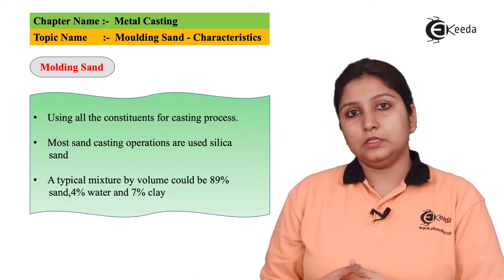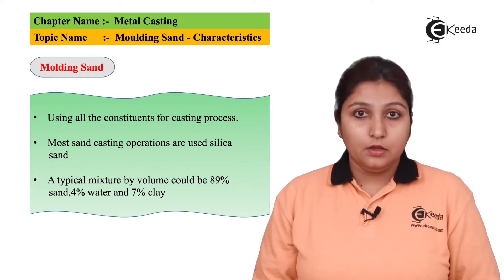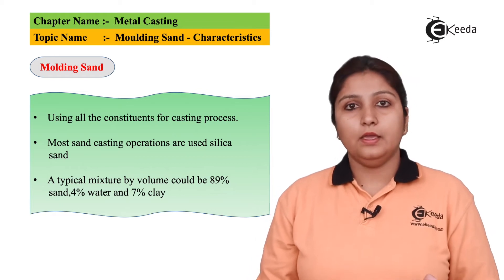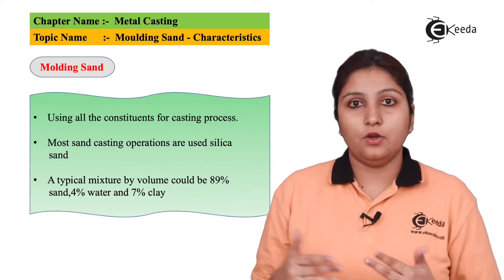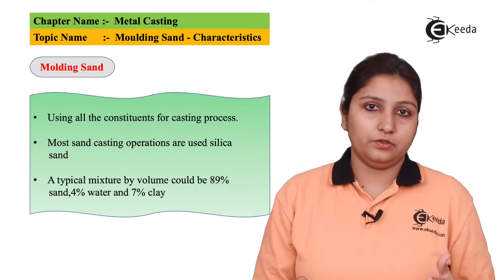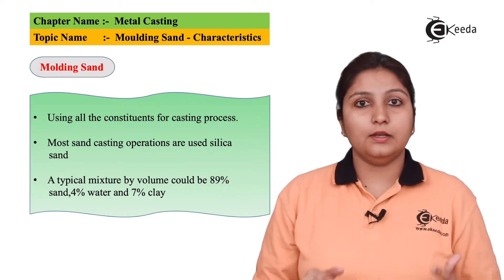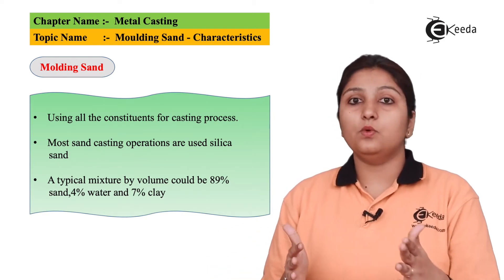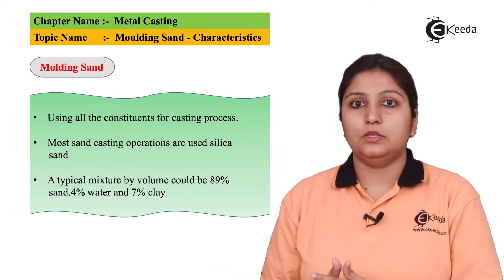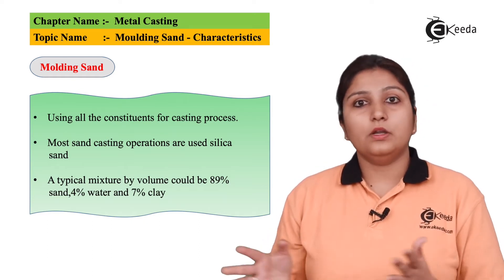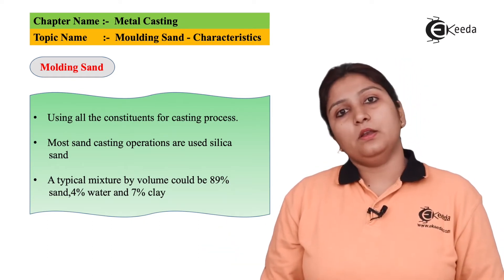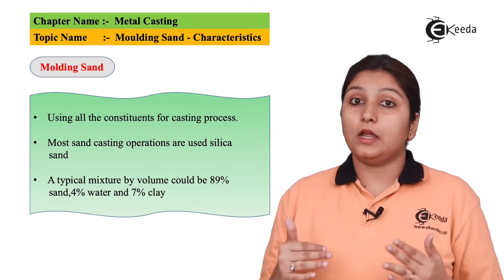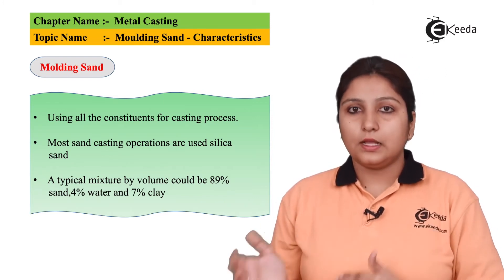Sand has some properties and some constituents. As mentioned, sand consists of normal sand, water, clay, etc. in specific quantities. Normal sand here means silica sand — silica is used along with clay, water, etc. in different quantities and different constituents according to the need. Whether the metal is ferrous or non-ferrous, any kind of casting basically needs sand.